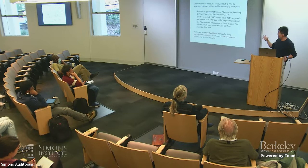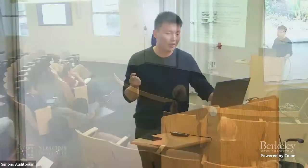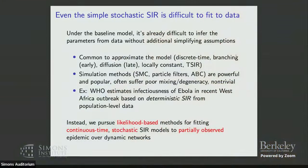Before getting to the network stuff, I want to motivate why inference is hard even for these simple models. There are a lot of people doing approximations — common ones include discretization over time, single-type branching processes for early stages, diffusion approximations for large populations, time-series SIR approaches. And even under approximations, the tools for inference tend to be computationally intensive — most are simulation-based, including sequential Monte Carlo (particle filtering) and ABC (approximate Bayesian computation).